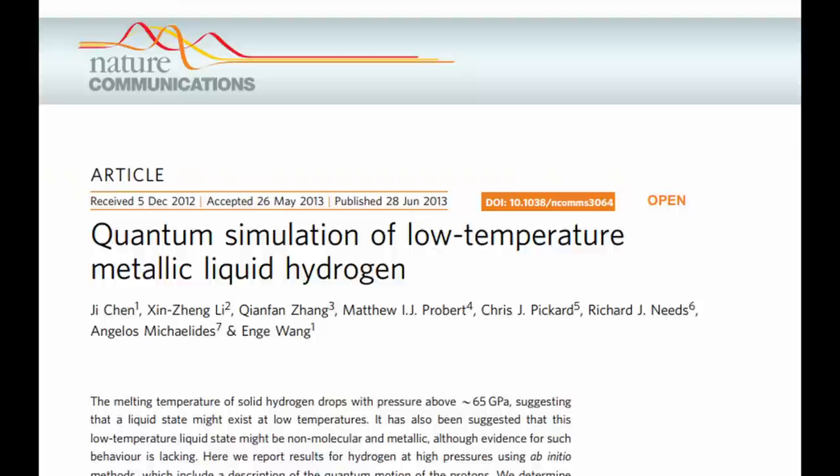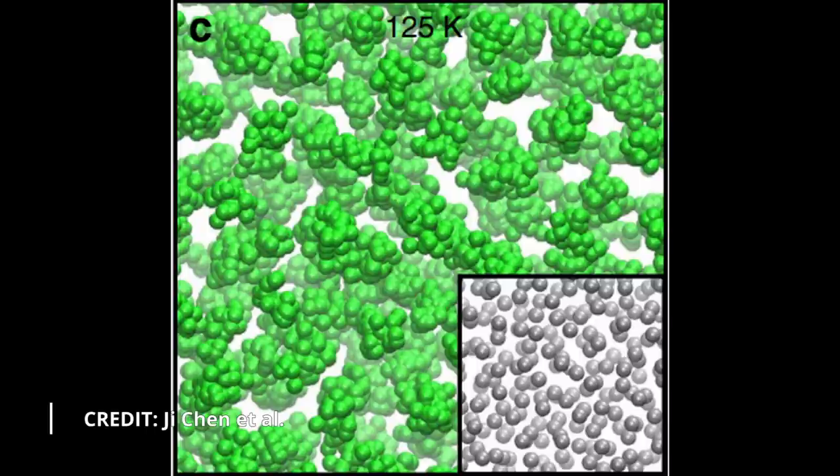The only modeling I could find on liquid metallic hydrogen would suggest a much more random movement, rather than a hexagonal lattice, which is what you would expect to form from a liquid compared to a solid.